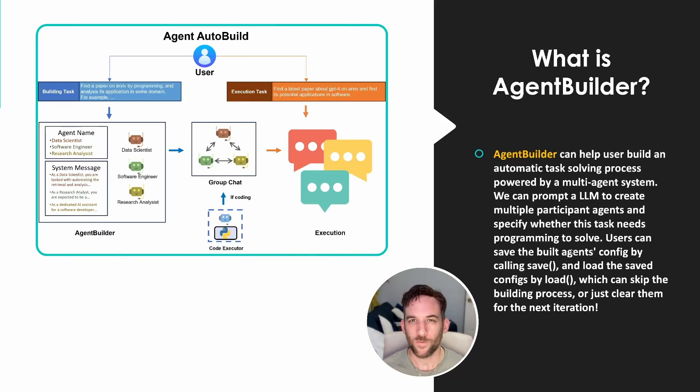A question I had was: what if we had Autogen create agents for us, and of those agents, it selects which ones are best for the task that we ask it to execute? I'm going to show you that today with something called Agent Builder. Let's get started.